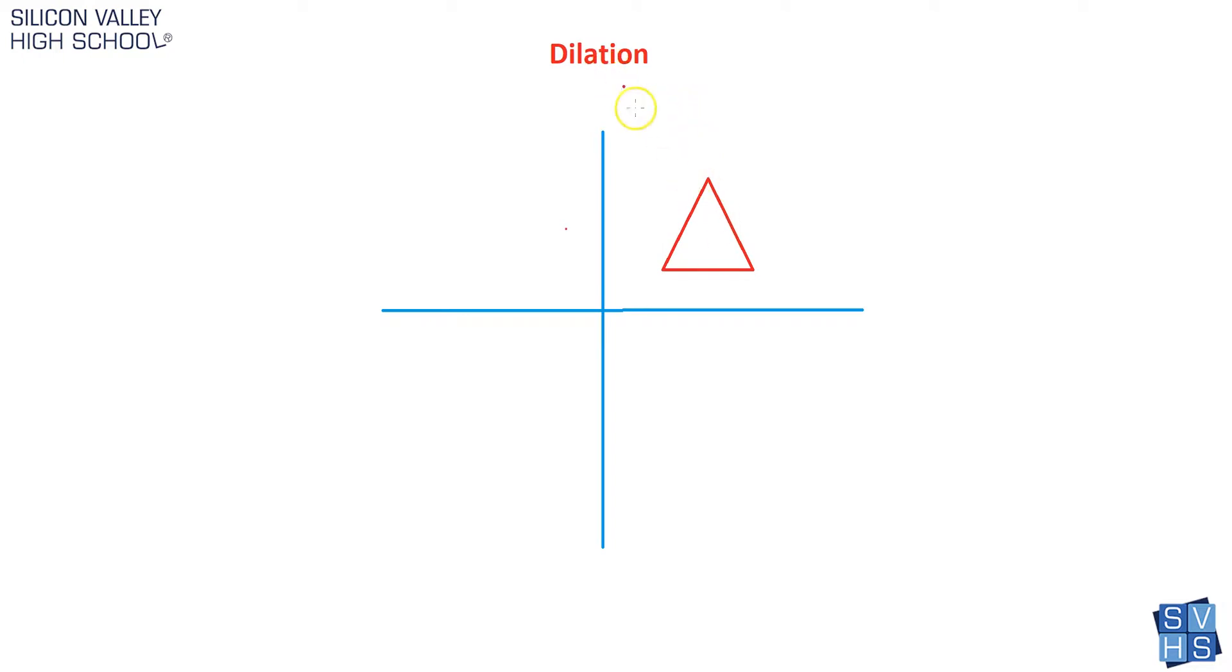So if I took this triangle and somebody said, let's dilate this triangle by a scale factor of 2, it might come out looking something like this. It would just get bigger. Or if I said, let's dilate this by a scale factor of 1 half or even 1 tenth, it would just get smaller. It would just shrink down to something like this.